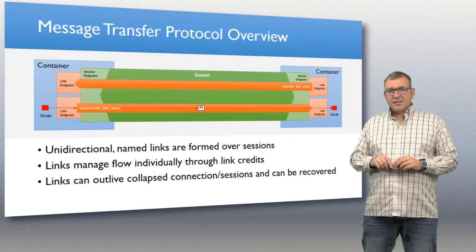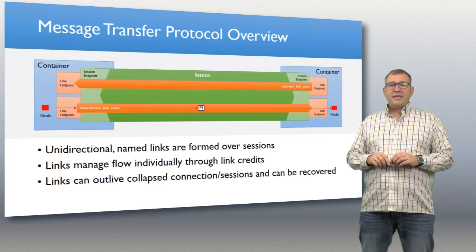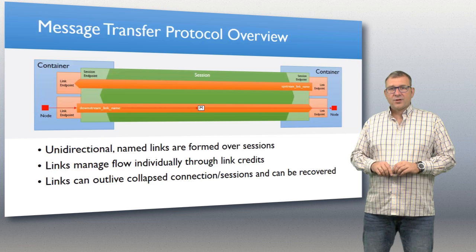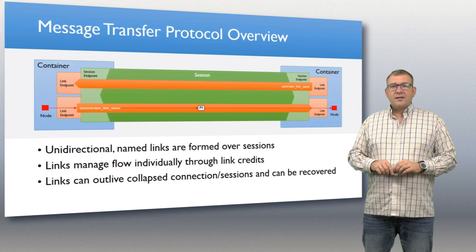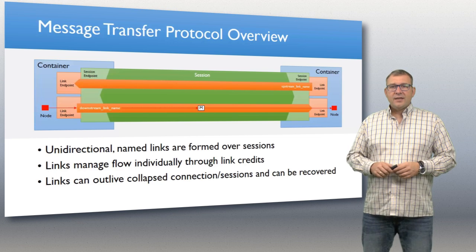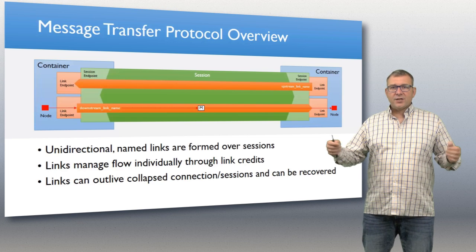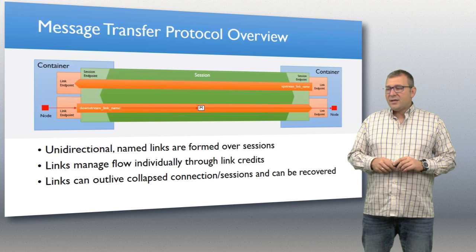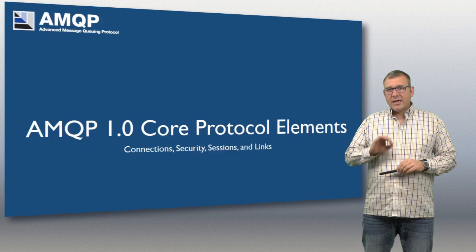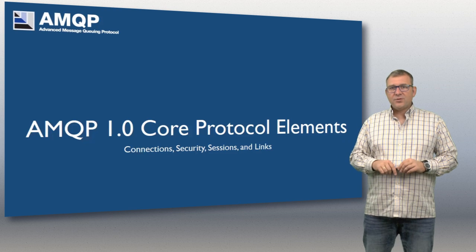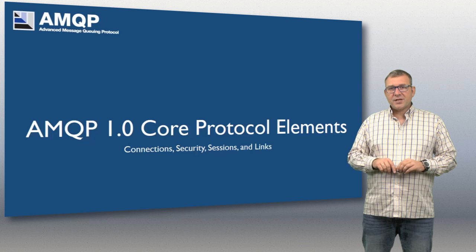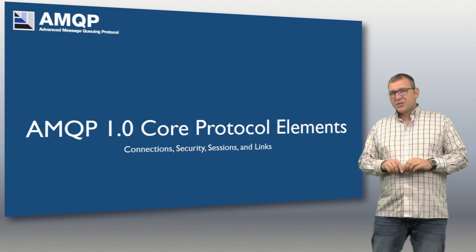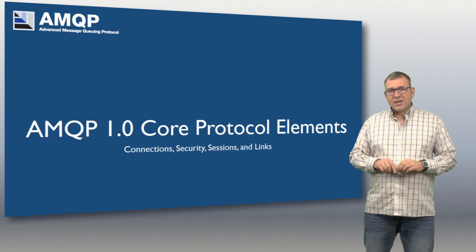What's interesting about links is that they are named by the application and can outlive connections and sessions. If the session or connection collapses and a new connection is created, you can recover those links and reconcile the delivery state between the two parties. That's an introductory overview of AMQP. In the following sessions, I'll talk about the protocol elements in more detail — next up: connection security, sessions, and links.